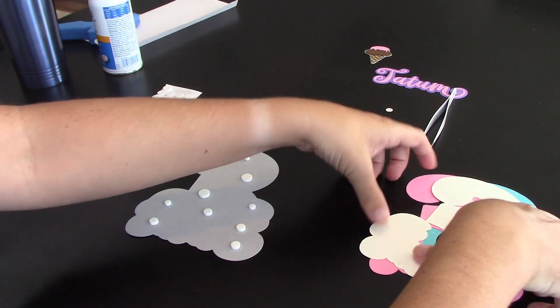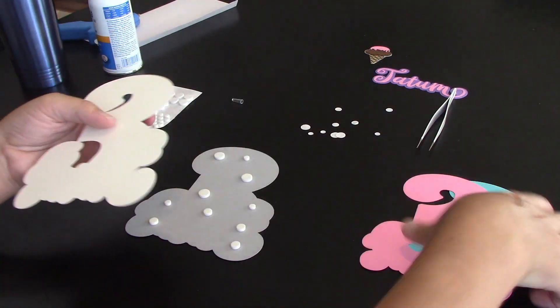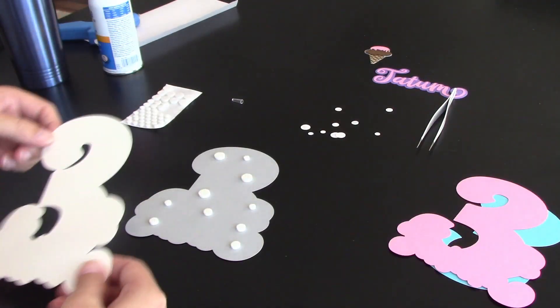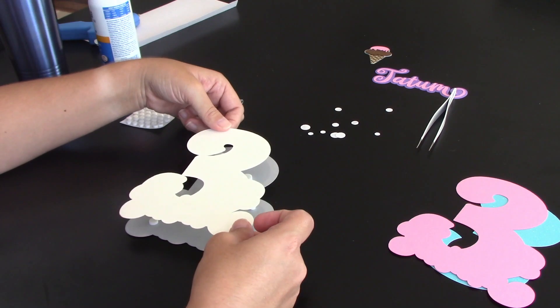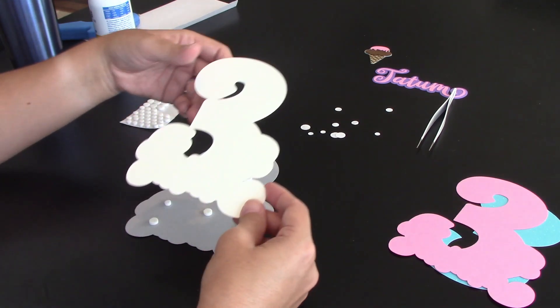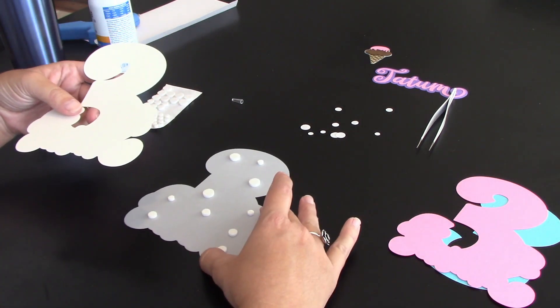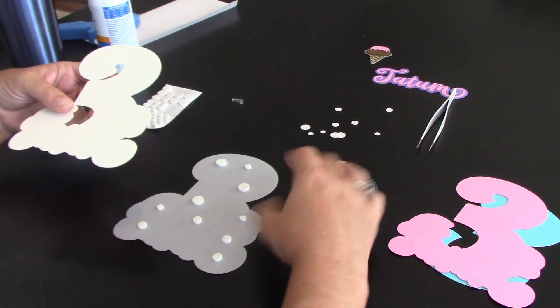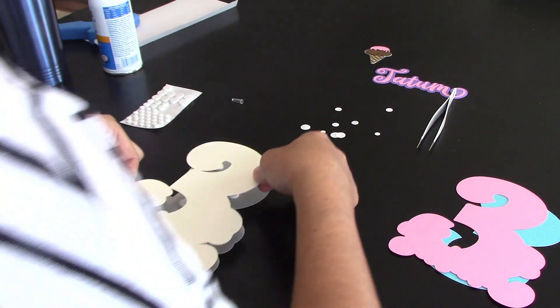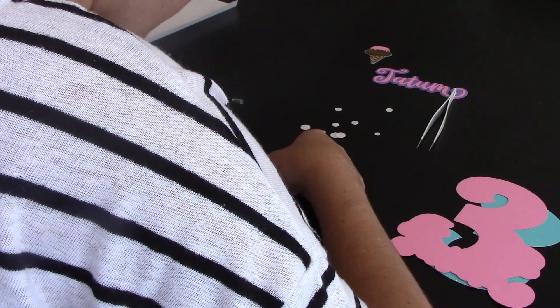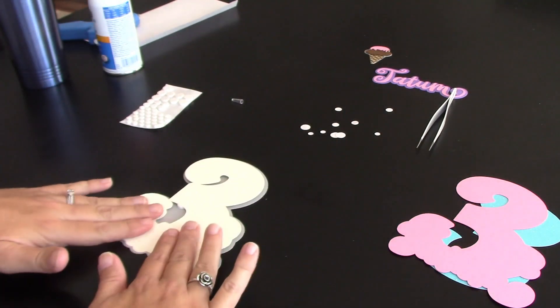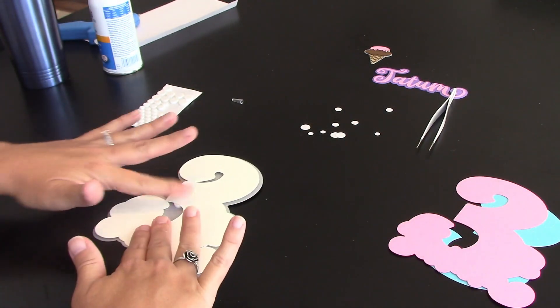And now I need to put my white layer on, I think. Let's see. Yes. So you're just going to kind of eyeball it. You want to be as precise as you possibly can because you don't want to do a lot of moving around. Once you lay it down, you're going to lose stickiness the more you move it around. And then just kind of push it down.